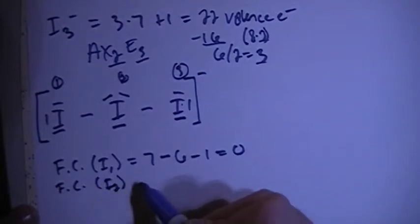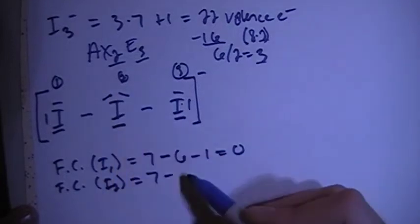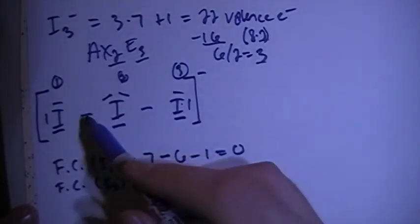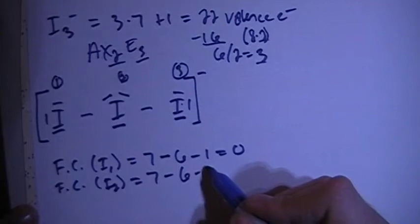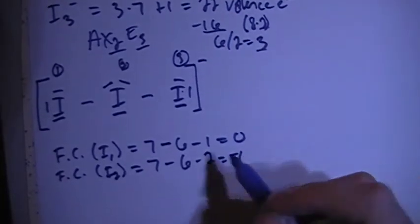So that's going to be an overall of minus one formal charge for the central iodine.